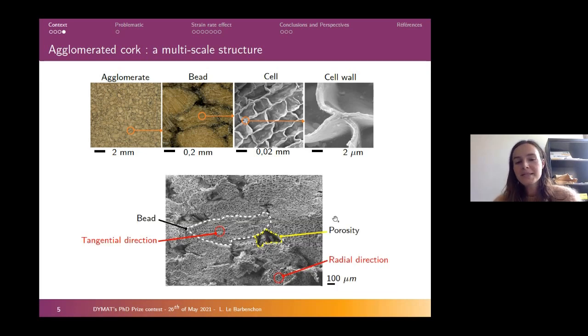The resulting material observed with a scanning electron microscope is quite intricate because we have porosities, the bead structure, and as cork has an anisotropic organization of its cells, we have several directions—here the tangential direction and here we can observe the radial direction.